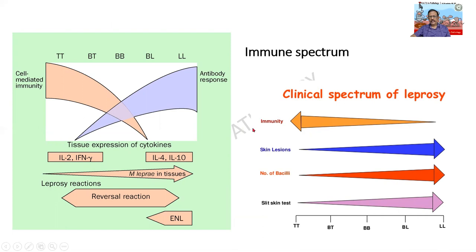Leprosy is more of a disease of immunity rather than infection by itself. There is a spectrum - anybody affected by leprosy does not develop the same manifestation as another. At one end is tuberculoid leprosy and at the other end is lepromatous leprosy. In tuberculoid there is an increased amount of cell mediated immunity, whereas in lepromatous there is an increased amount of antibody response.